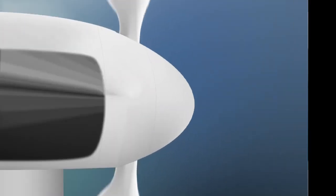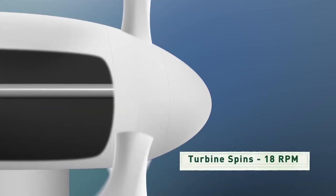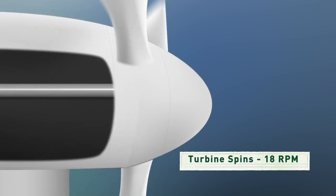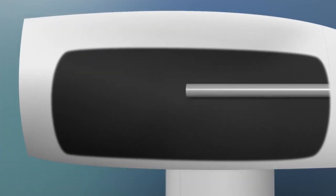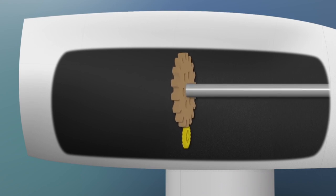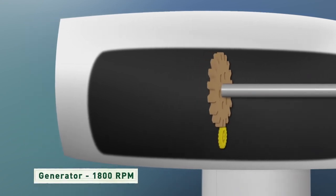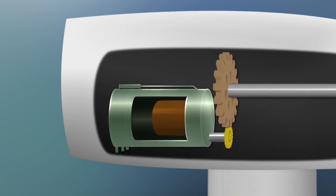Now the blades are attached to a shaft which only turns about 18 revolutions a minute, and that's not nearly fast enough to generate electricity by itself. So the rotor shaft spins a series of gears that increase the rotation up to about 1800 revolutions per minute, and at that speed the generator can produce a lot of electricity.